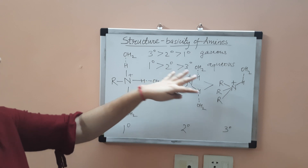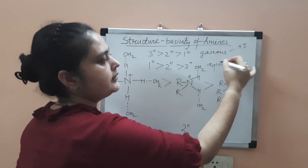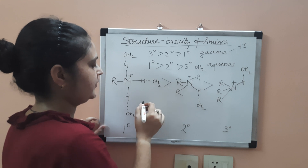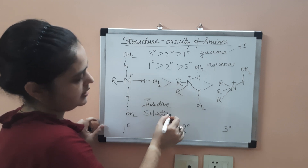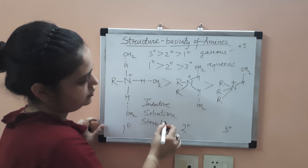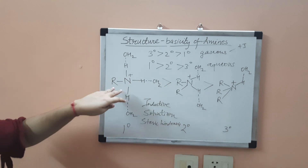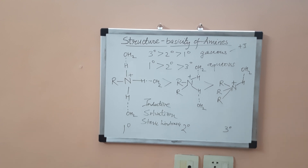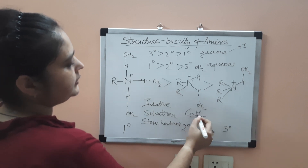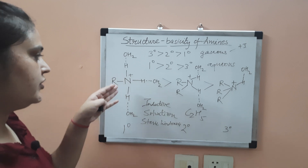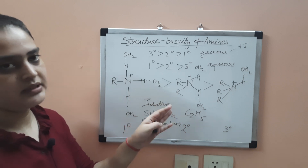In the gaseous phase only the inductive effect (+I effect) is working, but in the aqueous phase there is inductive effect, solvation, and also steric hindrance. Steric hindrance occurs when a larger alkyl group like C₂H₅ is present — it creates steric hindrance for solvation to take place, resulting in less solvation and therefore decreased basicity.